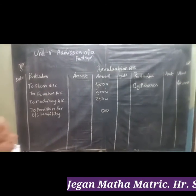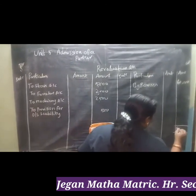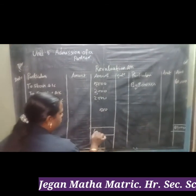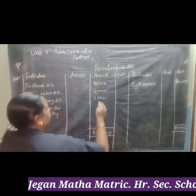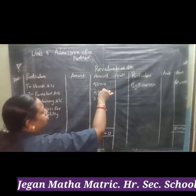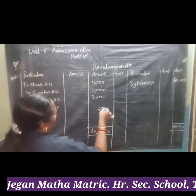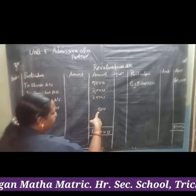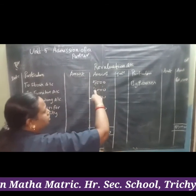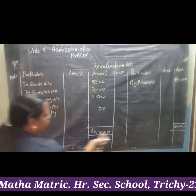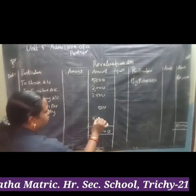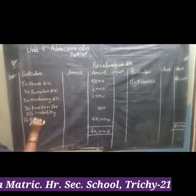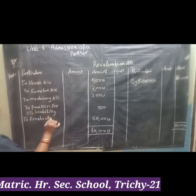The debit side has: Stock, Furniture, Machinery, and Provision for Liability. The credit side has: by Premises. The credit side is more — 60,000. Debit total: 5,000 + 2,000 + 2,500 + 500 = 10,000. So 60,000 minus 10,000 = 50,000. Revaluation Profit is 50,000.